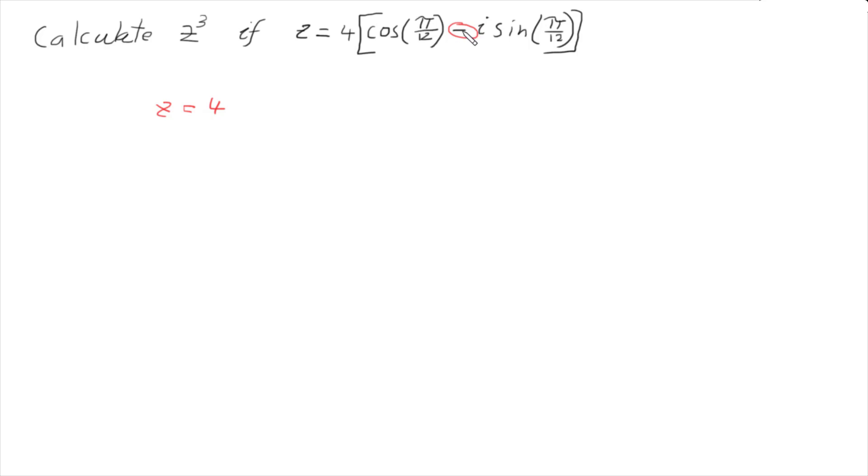Now, to turn that into a plus, I've got to make the angle be negative. So my z is now going to be, if I use the shorthand, 4 cis the negative of that angle pi over 12.